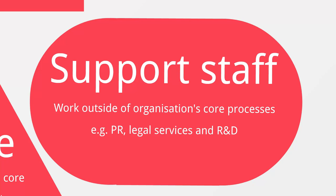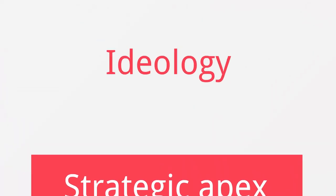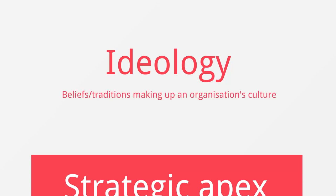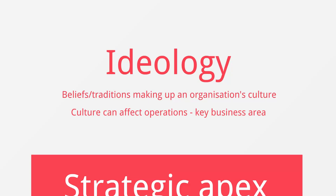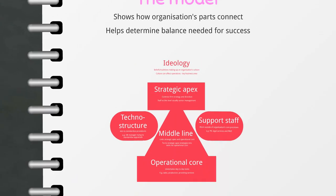Right at the top of the model is ideology. Ideology refers to the beliefs and traditions that make up the culture of an organization, and it sits above the five elements of the model because the culture of an organization can directly affect its operations. It's therefore vital that it's considered a key area of a business.